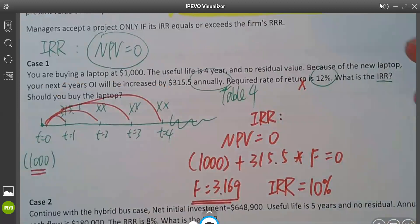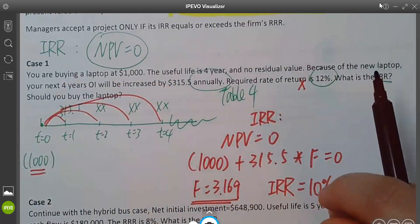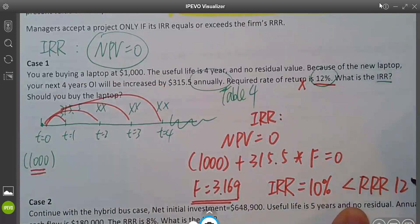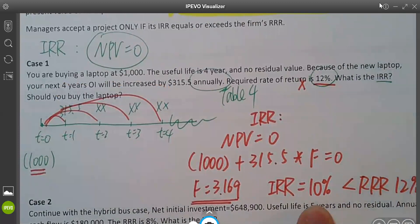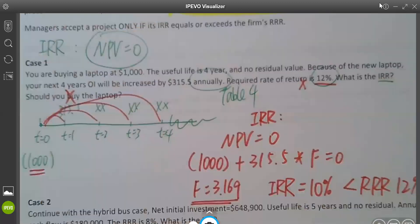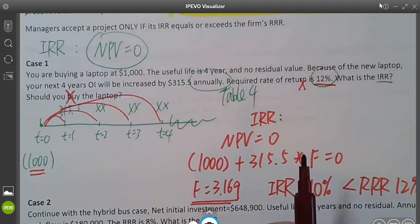Practice, practice, practice. The good thing is, it's just straightforward. You set up the equation NPV equals to zero. You got a factor. From the factor, you got your IRR. And then required rate is RRR 12%. We only got 10% for this investment. Should we buy the laptop, yes or no? We should not buy the laptop. I leave the second case to you. Make sure you practice and double check your work with me.